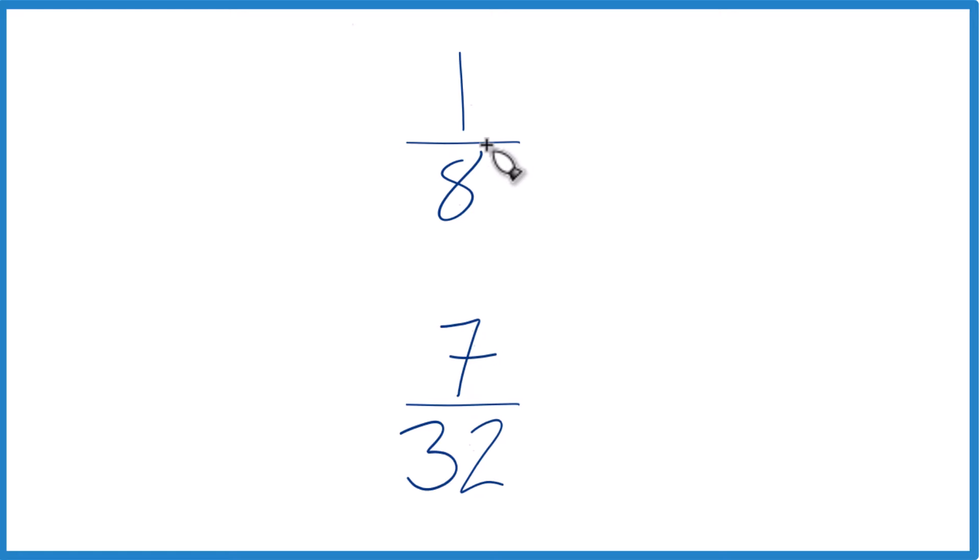Figure out whether 1/8 is greater than, less than, or equal to 7/32. The other way is to find a common denominator. Right now we have 8 and 32. But if we had the same denominator, we could just compare the numerator. So let's try that.